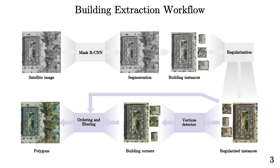Once the buildings have been refined, we extract their corners using a second simple CNN, and we generate valid polygons by ordering and filtering the detected corners using the regularized mask.